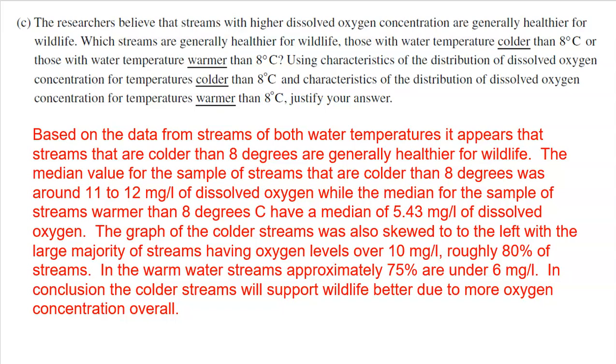The meat, now here comes my why, right? Because it did say use the characteristics. I went ahead and used the median, the center, and also the shape. The median value for the sample streams that are colder than 8 degrees was around 11 to 12 milligrams per liter of dissolved oxygen. While the median for the sample of streams warmer than 8 degrees Celsius was 5.43 milligrams per liter of dissolved oxygen. So clearly the colder streams have a higher center. In fact, much higher.